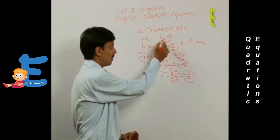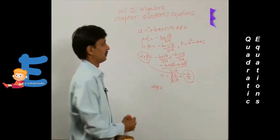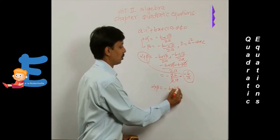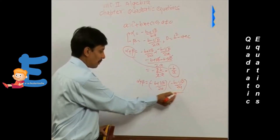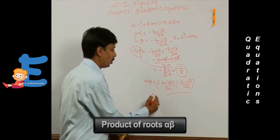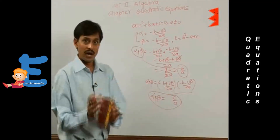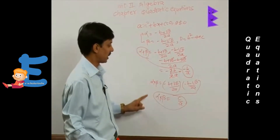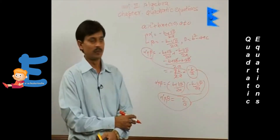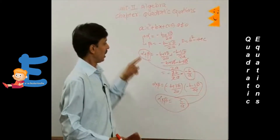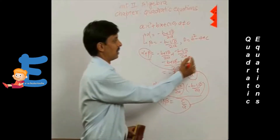Using the same values, the product of roots alpha into beta equals (minus b + root D)/2a multiplied by (minus b - root D)/2a. When we multiply these two components, the product of roots alpha into beta comes out to be c upon a. So if sum of roots and product of roots are given, how do we find the quadratic equation?